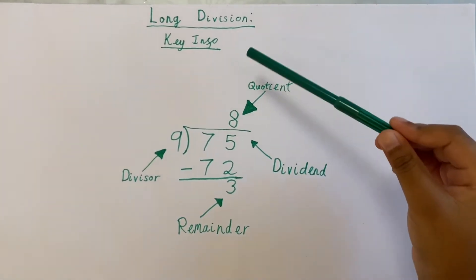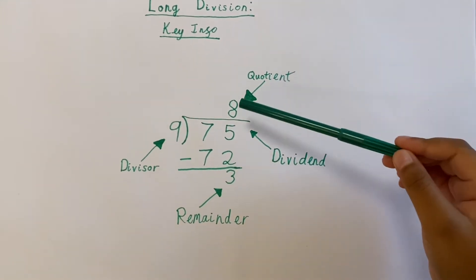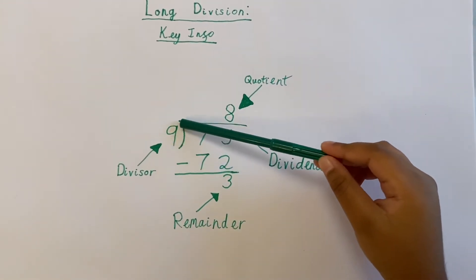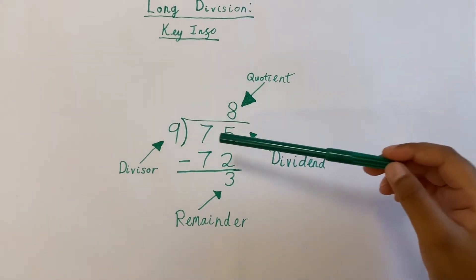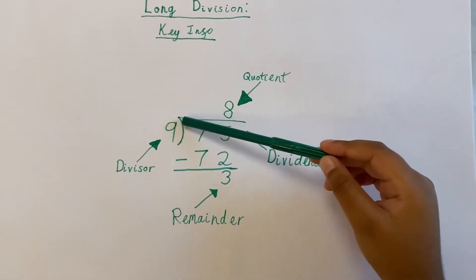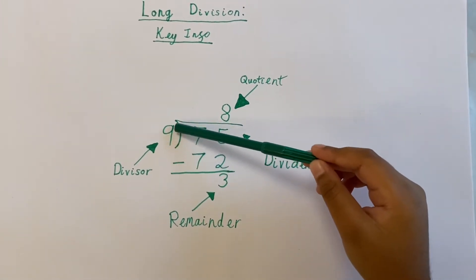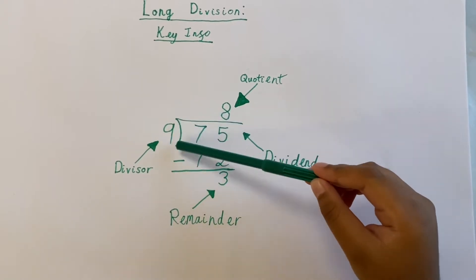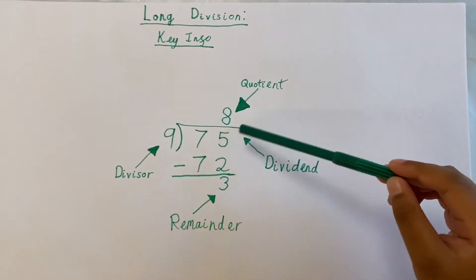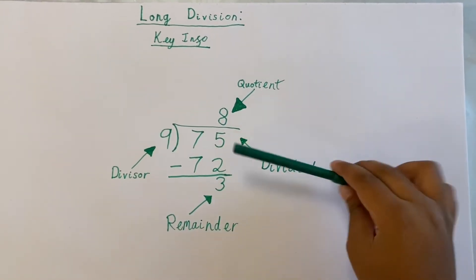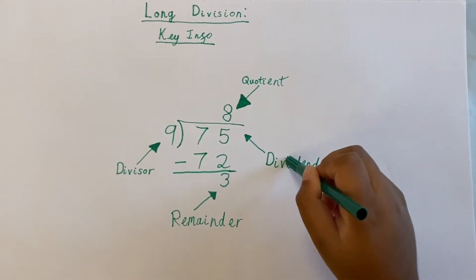So here is the key info of long division. Here we have the long division symbol, which has a bracket and a horizontal line. The number here is the dividend, which is the number that we need to divide into equal parts.